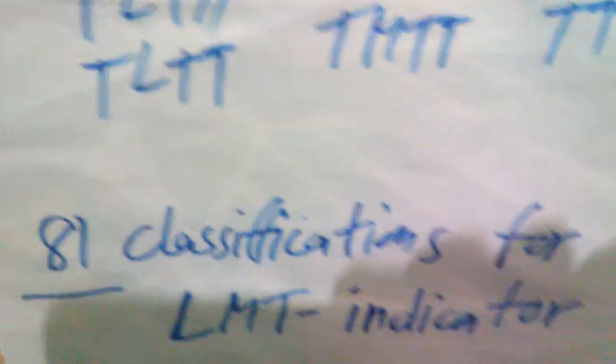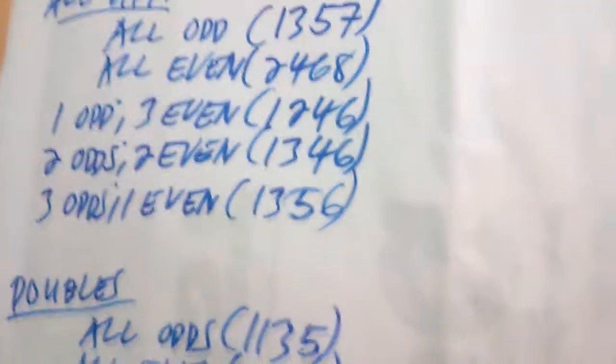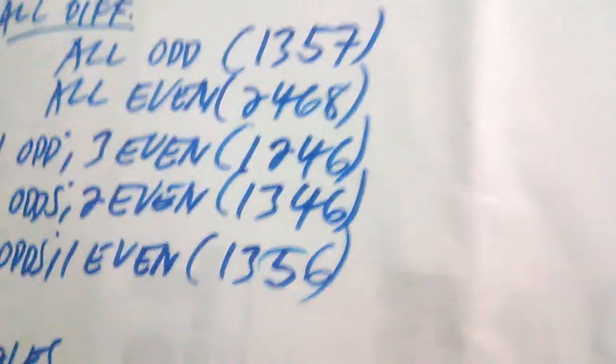We also have other number combination classifications for the middle numbers and for the top numbers, as shown on screen. In total, these are the 81 classifications of number combinations for the low-middle-top indicator. I am showing these to you because these classifications will be used in our discussions, just as we did in our discussions for PIC3. I want you to be familiar with these combinations so it will be easier to understand the Freedom25.Strategy as we go along.